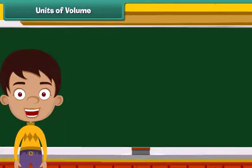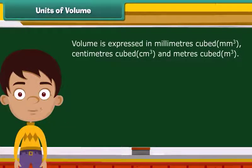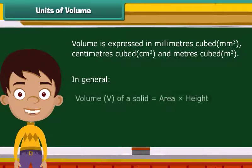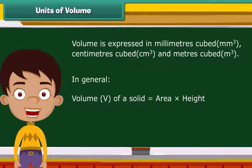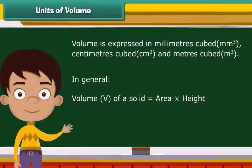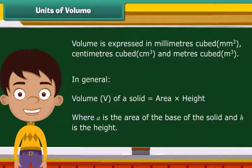Basically, volume is expressed in millimeters cubed, centimeters cubed and meters cubed. In general, the volume of a solid is given by area of the base into height, where A is the area of the base of the solid and H is the height. Let's learn about the volumes of different objects.